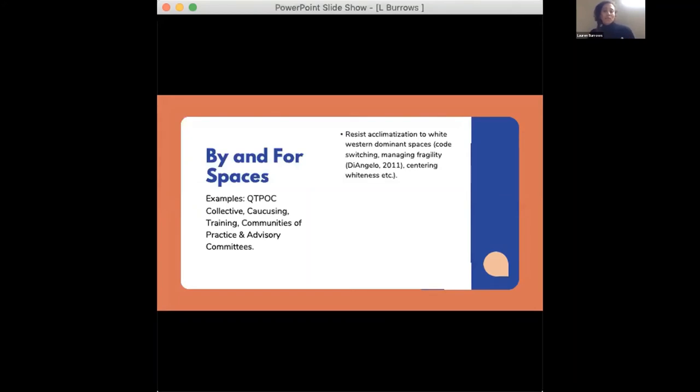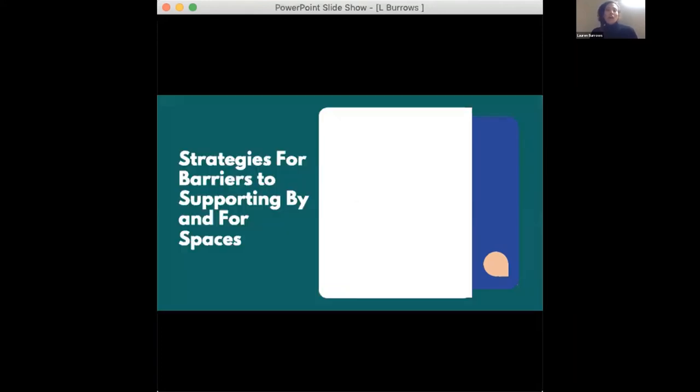These spaces become particularly important because they resist acclimatization to white western dominant spaces. Students don't have to code switch, manage fragility, or center whiteness. They build community and capacity. They create opportunities to address lateral violence free from the dominant gaze. They allow for sustainable cross-movement organizing so you can mitigate some of the harm that might happen when engaging in processes of solidarity and mutual aid beforehand. And they provide really meaningful educational opportunities.